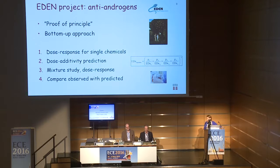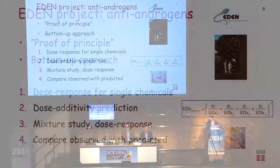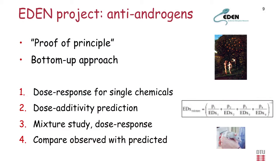The first project we went into — and this is something of a history of mixture research — was called the Eden Project. It focused on anti-androgens and the purpose was proof of principle, not direct human relevance. We used a bottom-up approach: first we did dose-response for all single chemicals, then the dose additivity prediction was made based on the established formula, then we did the mixture study and compared.